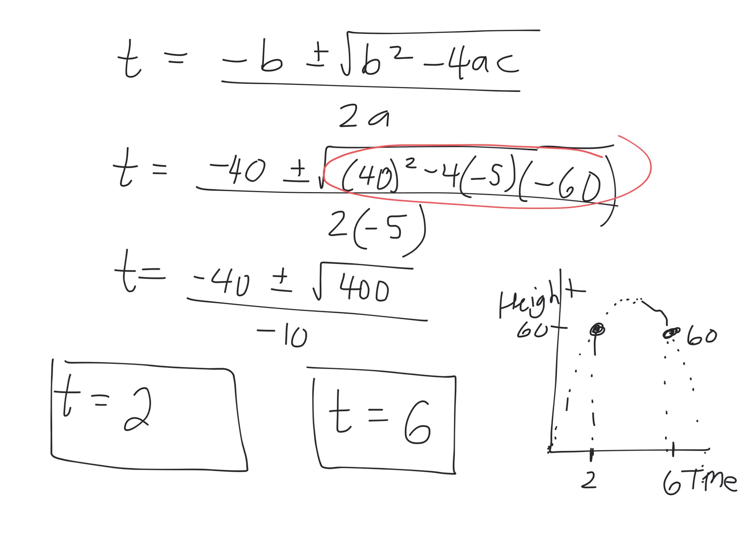What's the axis of symmetry? You can do this in your head right now. How many seconds does it take for the rocket to reach the highest point? What's in between 2 and 6? So after 4 seconds, it reaches the highest point. Can anyone figure out how high this rocket goes right now in your head?